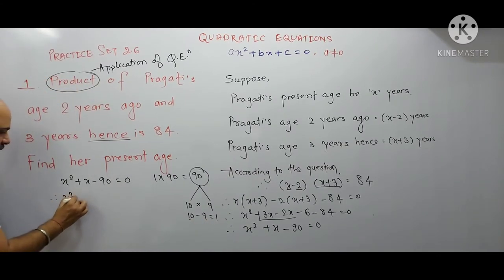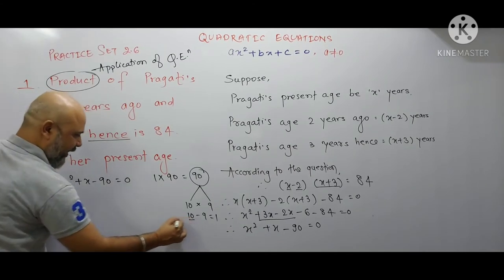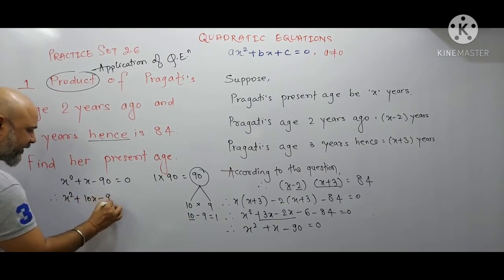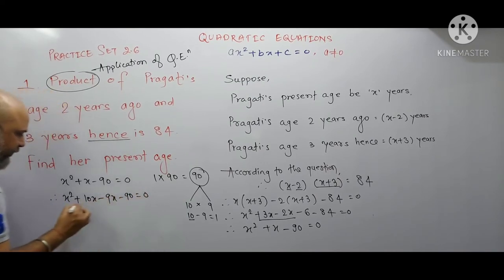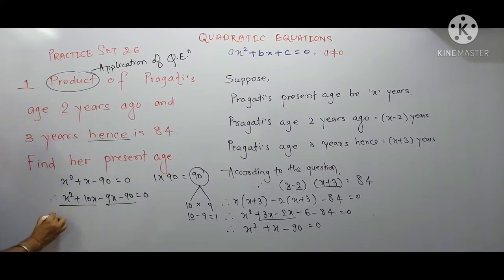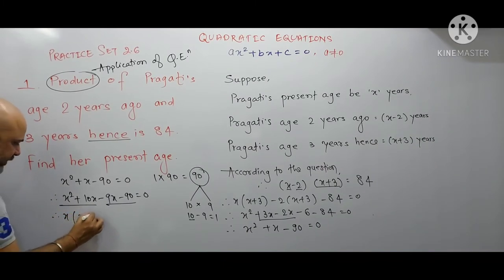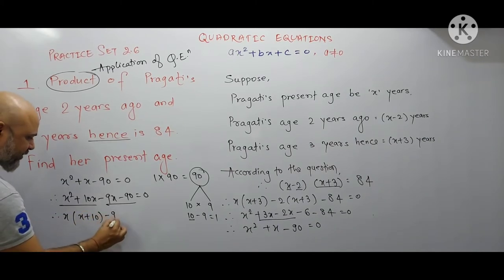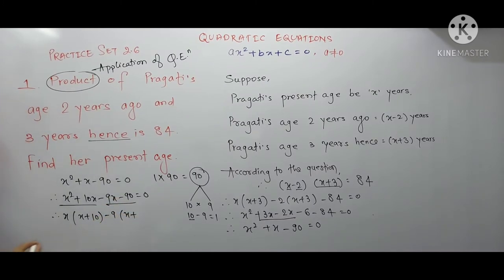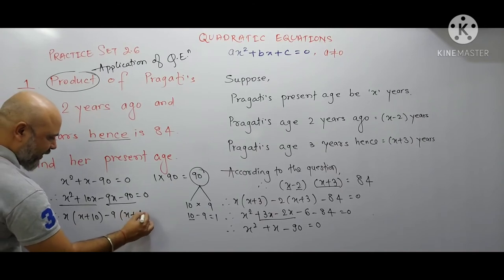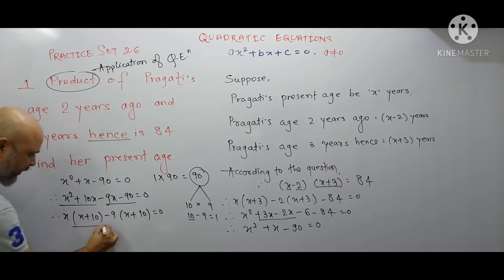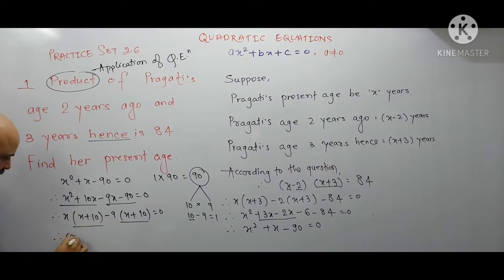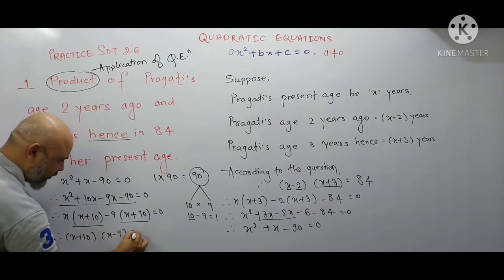Therefore we write x² + 10x − 9x − 90 = 0. Making two pairs: from the first pair take x as common to get x(x + 10), and from the second pair take minus 9 as common to get −9(x + 10). So we get (x + 10)(x − 9) = 0.